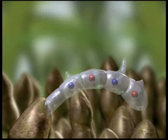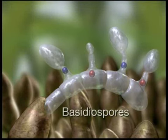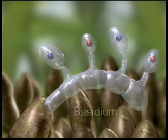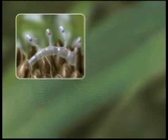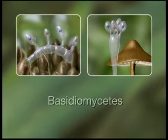On each of them, a sterigma emerges. The nuclei migrate through it into the developing basidiospores. As a complete entity, this fungal organ is designated a basidium. Similar basidia are found in most mushrooms. For this reason, they are classified together with the rusts and smuts as basidiomycetes.